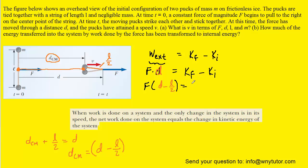On the other side, the final kinetic energy would be one half times the mass multiplied by the final velocity squared. We have to be careful because the total mass of our system is actually 2m, so we call it 2m and multiply by the final velocity squared. For the initial kinetic energy, the initial velocity of the pucks was zero, which means the initial kinetic energy equals zero.